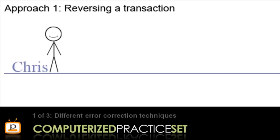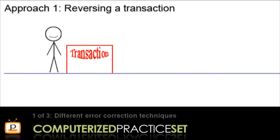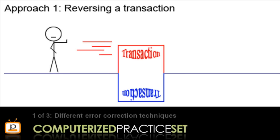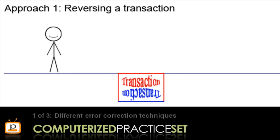Meet Chris. Chris has a transaction, but there is a problem — it's the wrong transaction. To reverse this transaction, Chris must construct a transaction that is the exact opposite. These two transactions work together to exactly cancel each other out, leaving the situation clear to bring in the correct transaction.